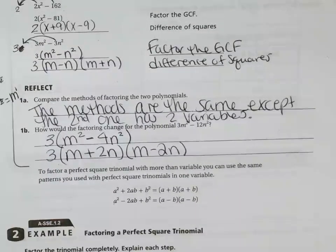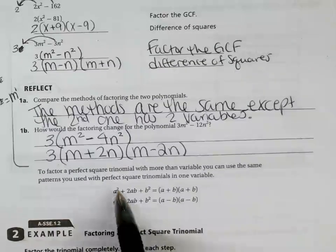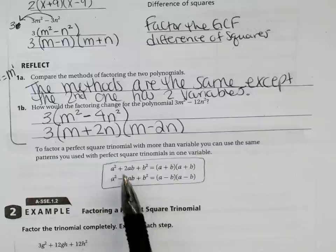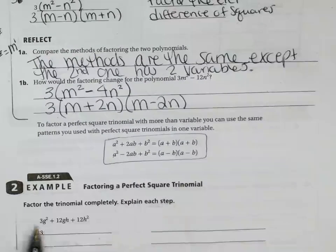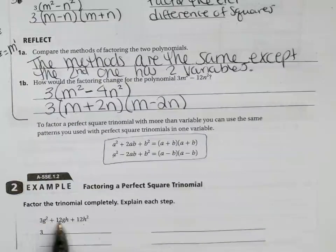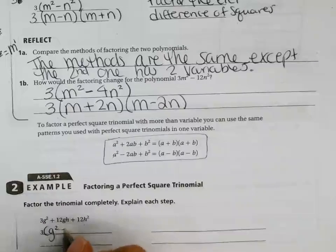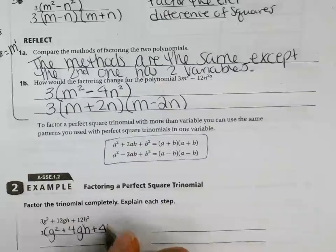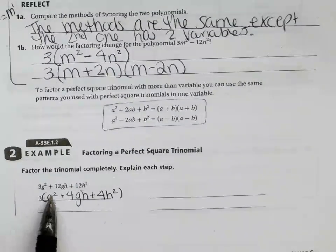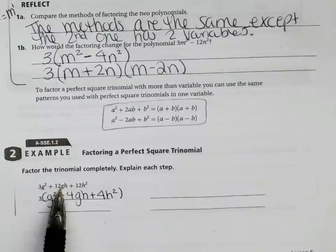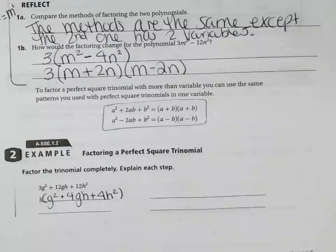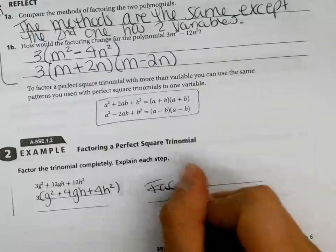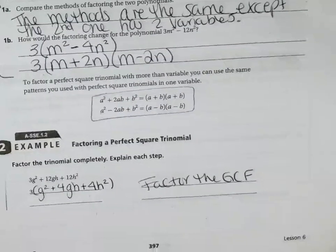So on this one, the only difference that I had to do is I had to also take into account that there was a coefficient that was a perfect square. To factor a perfect square trinomial with more than one variable, you can use the same patterns that you use with the perfect square trinomials in one variable. We already did this the other day, right? Remember this? If it's a perfect square and a perfect square, then the middle term is 2 times their square roots.